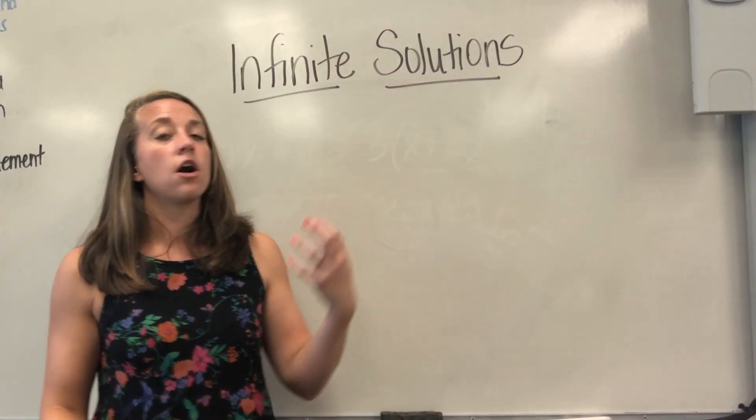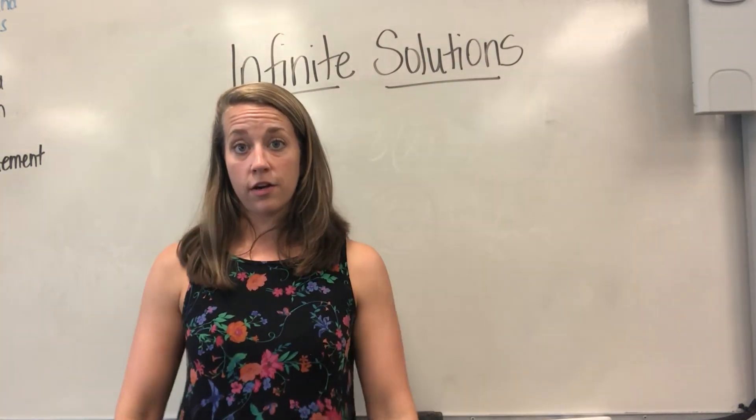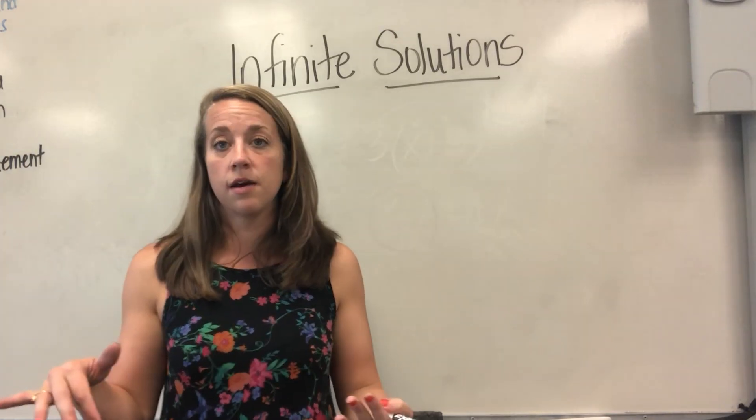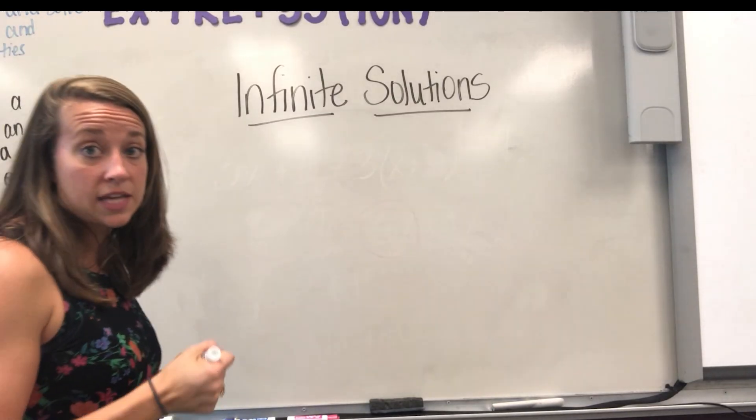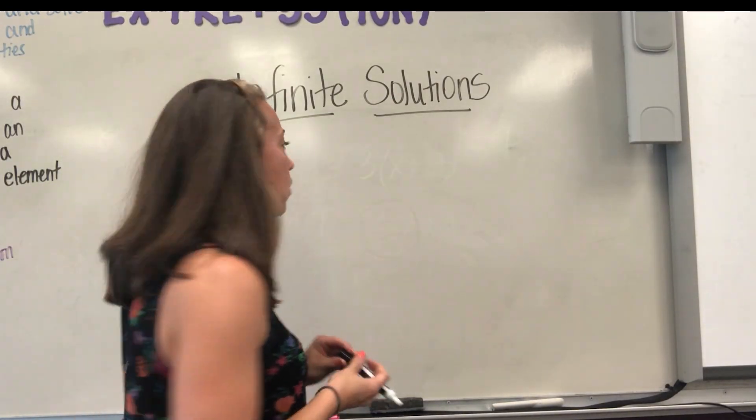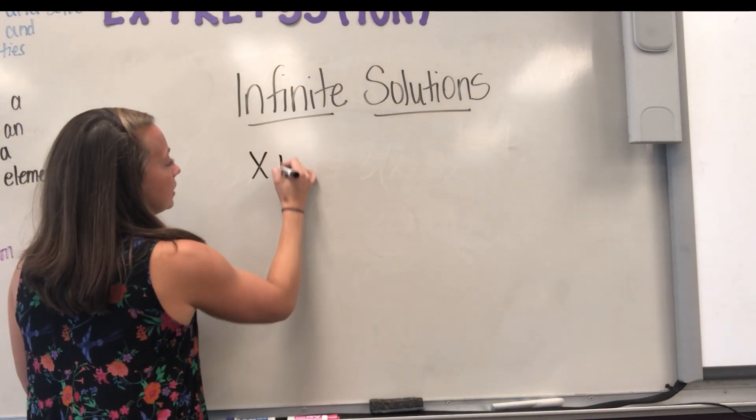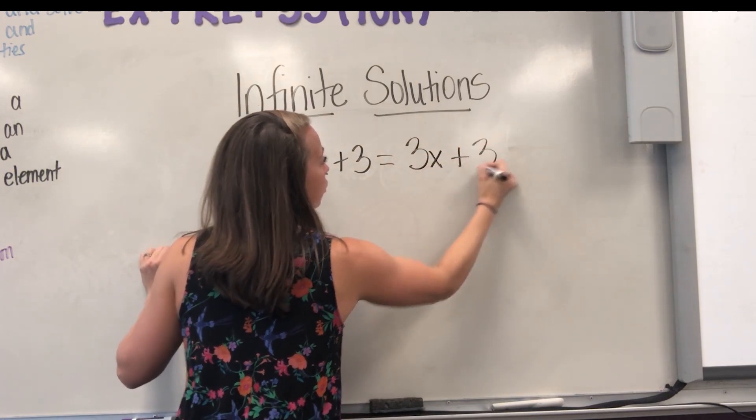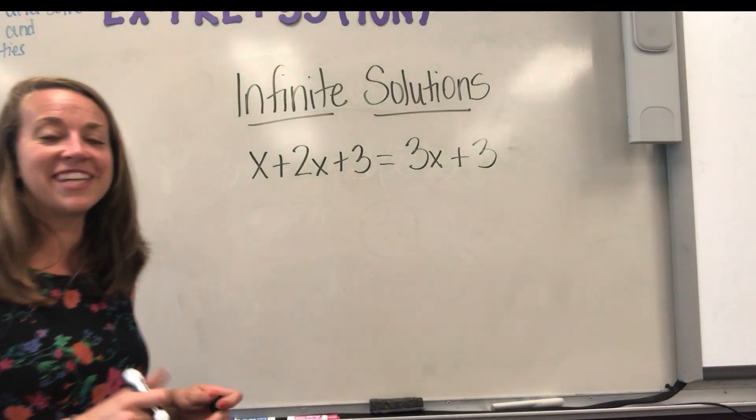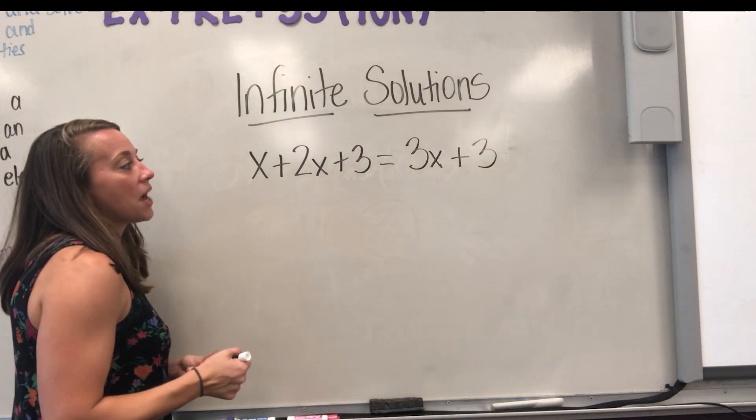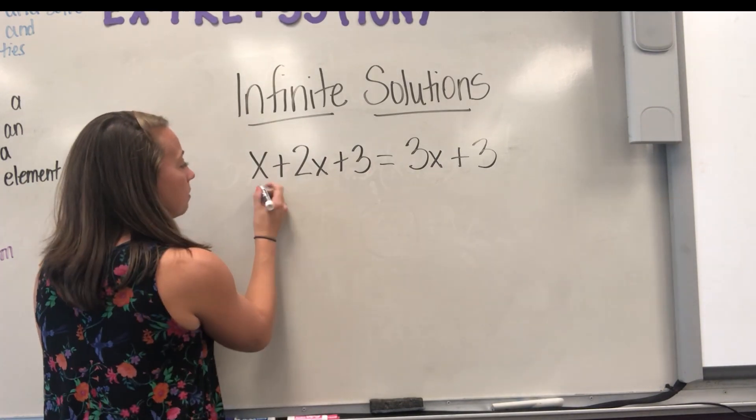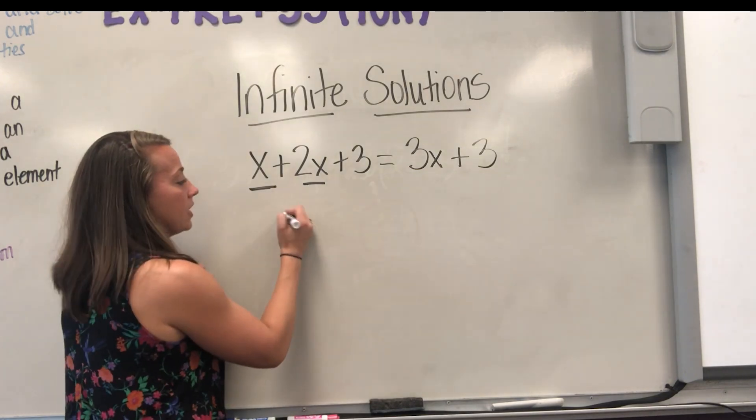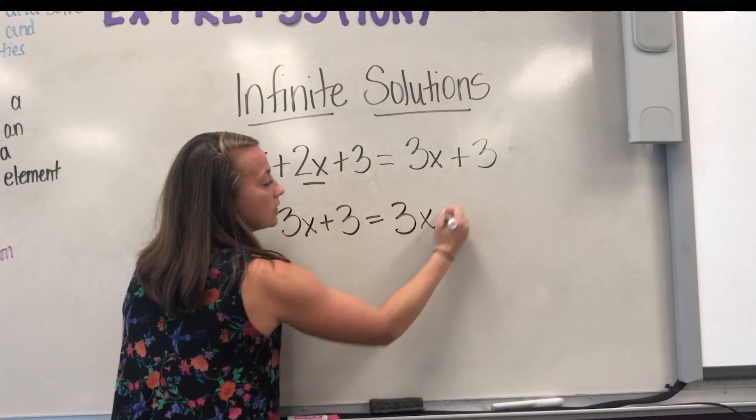Alright, last but not least, we're going to talk about the type of equation where any number will work. I could pick any number in the whole world, it's going to work, positive, negative, decimal, fraction, any number is going to make the equation true. So let's look at an example of this, and I bet you're going to see the trick pretty quick. Let's say that I have X plus 2X plus 3 is equal to 3X plus 3. You may already see where we're going with this one. The first thing I'm going to do is look at my left and see can I simplify the left, and I can because I have like terms. I'm going to combine those two like terms, X plus 2X, and I'm going to get 3X plus 3 equals 3X plus 3.